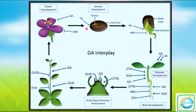Now look at this chart. This is the seed. This dormant seed gets ruptured with the help of gibberellic acid — it breaks down the dormant seed, the embryo divides and redivides, and it germinates with the formation of a radicle. Abscisic acid inhibits the formation of a radicle, while gibberellic acid plays an important role in seed germination.